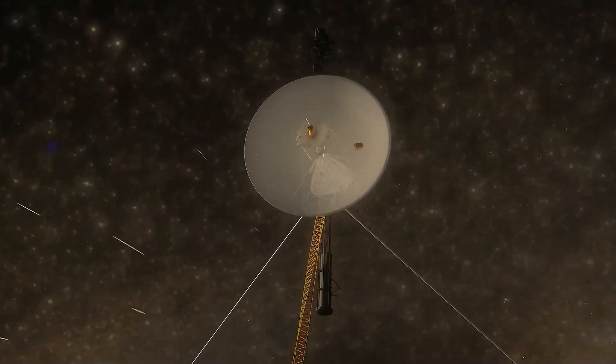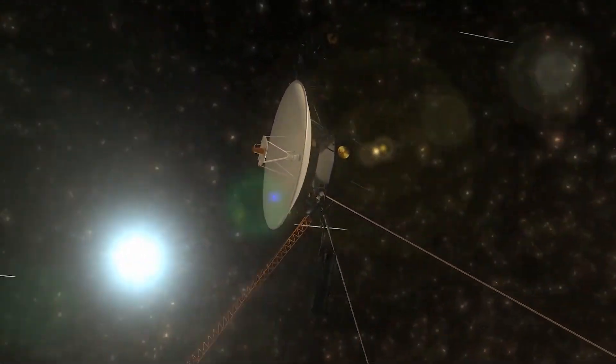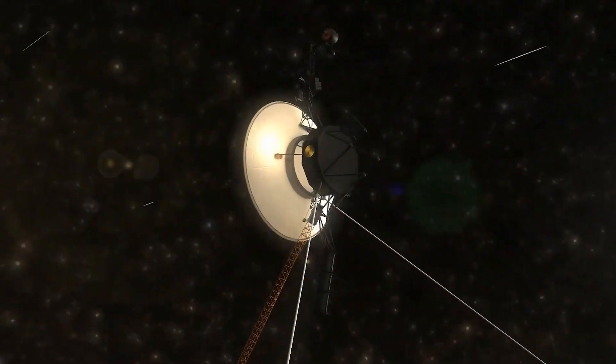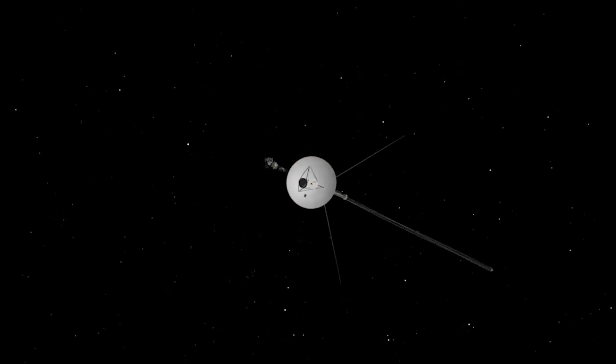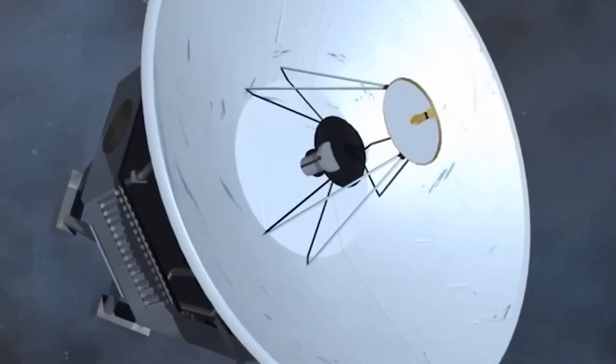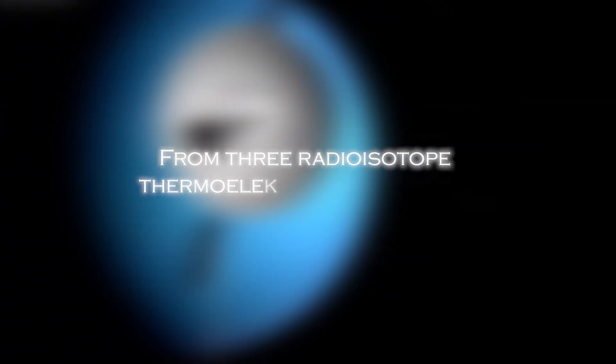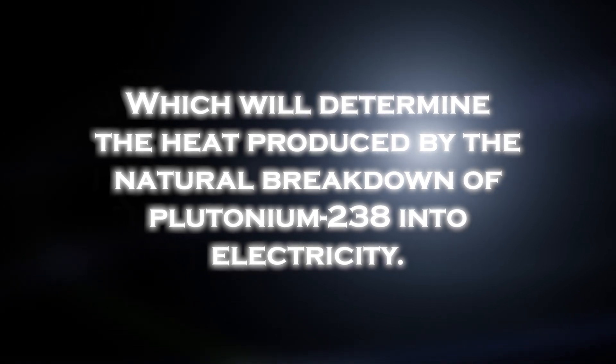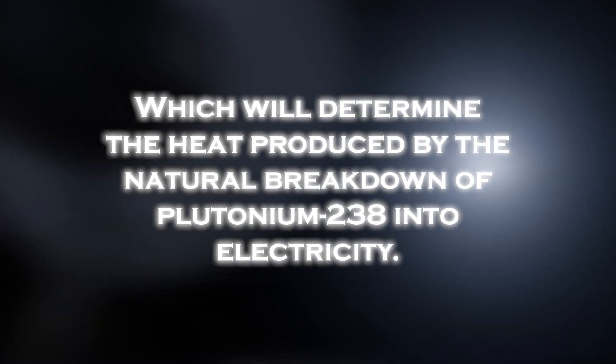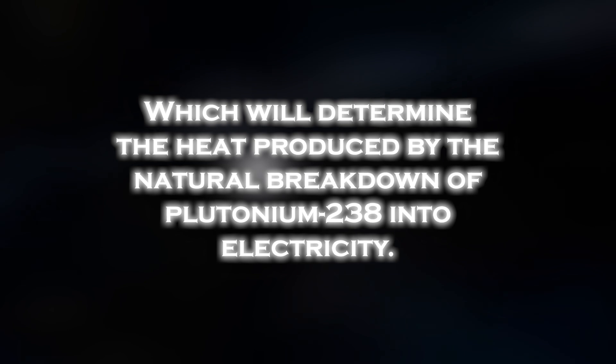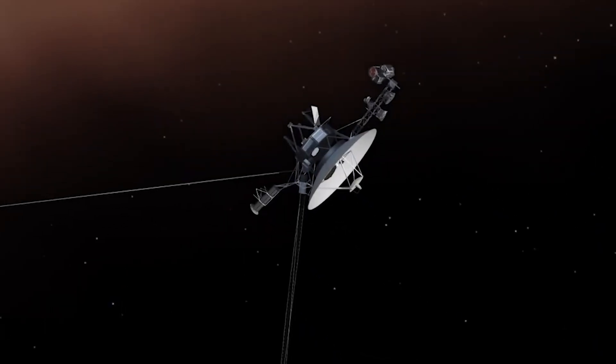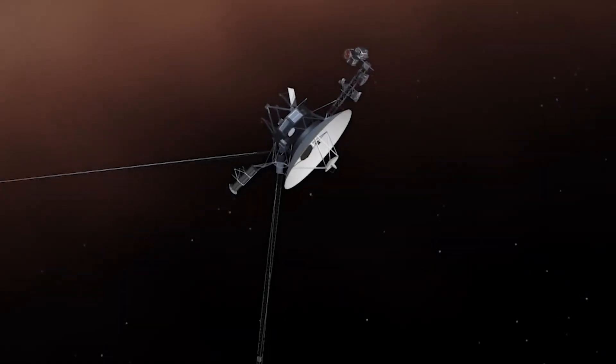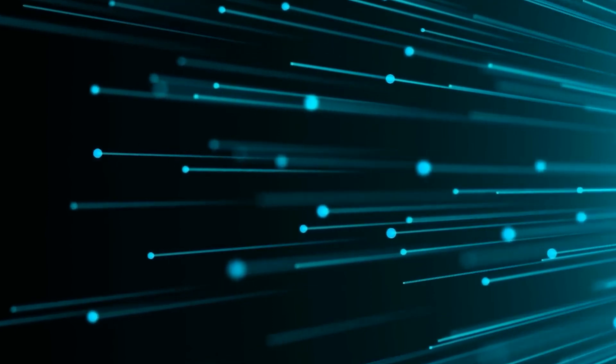However, this milestone was not easy to achieve. As the probe moved farther and farther away from the sun, the amount of sunlight available to power its instruments and systems significantly decreased. The spacecraft's power is generated primarily from three radioisotope thermoelectric generators, which convert the heat produced by the natural breakdown of plutonium-238 into electricity. As the heat output of the thermoelectric generators has decreased over time, the available power has decreased.